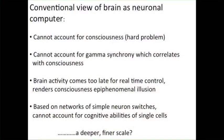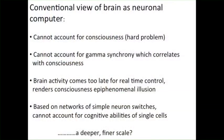To summarize, the conventional view of the brain is a neuronal computer. It cannot account for consciousness — the hard problem. You might say consciousness emerges from complex computation, but no threshold has been specified. It cannot account for gamma synchrony without lateral connections and electrical gap junctions. Brain activity comes too late for real-time conscious control, rendering consciousness epiphenomenal. And it's based on networks of simple neuron switches which cannot account for the cognitive abilities of single cells. Perhaps we need to look at a deeper, finer scale in a fractal hierarchy going lower.